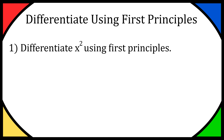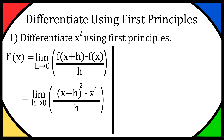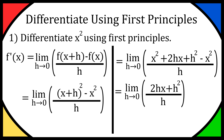Hey everyone, welcome to the video. I'm going to show you how to differentiate using first principles. Question one asks us to differentiate x squared using first principles. We're going to use the formula: f′(x) equals the limit as h tends to 0 of f(x plus h) minus f(x) over h. Subbing in, f(x plus h) is (x plus h) squared, so we have (x plus h) squared minus x squared over h. Expanding gives x squared plus 2hx plus h squared minus x squared over h. The x squareds cancel, leaving 2hx plus h squared over h, which divides to 2x plus h. As h tends to 0, that just leaves us with 2x.